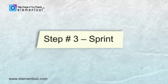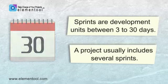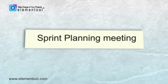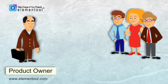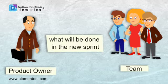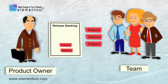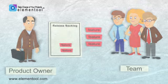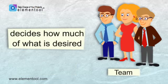Step 3 is Sprint. Here is when most of the work is being done. Sprints are development units between 3 to 30 days, and a project usually includes several sprints. At the beginning of each sprint, the team will have a sprint planning meeting. In this meeting, the product owner and the team get together to decide what will be done in the new sprint. They select items of the highest priority from the release backlog, and the product owner describes to the team what is desired while the team decides how much they can complete in this sprint.